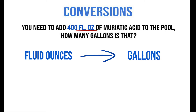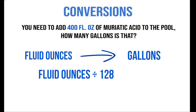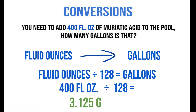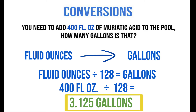The first thing we want to look at is the conversion for fluid ounces to gallons. Fluid ounces divided by 128 will give us gallons. So if we take our 400 fluid ounces and divide by 128, we get an answer of 3.125 gallons. That's how many gallons are equivalent to 400 fluid ounces of muriatic acid to add to the pool.